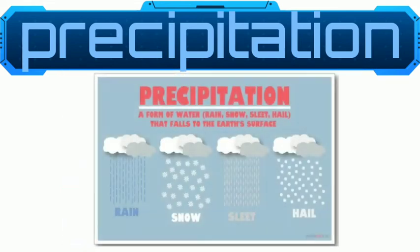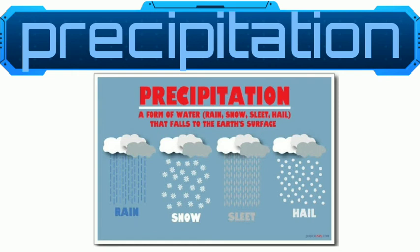Types of precipitation. Precipitation is classified according to the form in which it reaches the ground. The temperature of the air both inside and outside the cloud determines whether the precipitation is rain, snow, sleet, or hail.